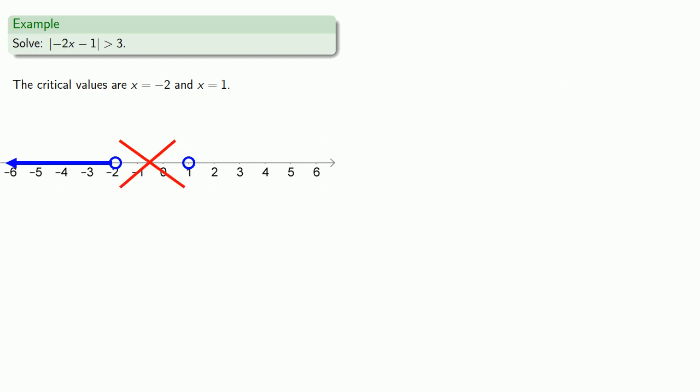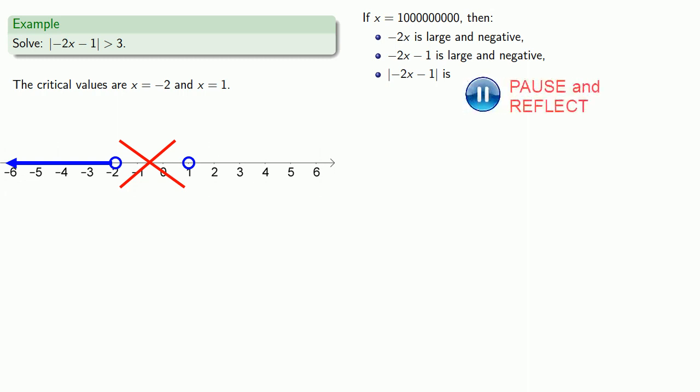Finally, we have this interval off to the right. So let x be 1 billion. Remember, x is a large positive number. Let's go through the different components of our inequality. Minus 2x, that's minus 2 times a large positive number, which gives us a number that is large and negative. Minus 2x minus 1: I'm going to subtract 1 from a large negative number and get a large negative number.